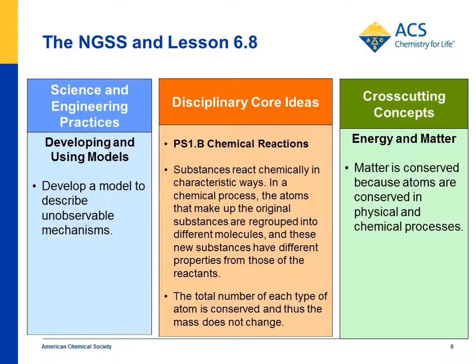The idea is to develop a model to describe unobservable mechanisms — that's when students see the transfer of a proton from one water molecule to the other and begin to understand H3O+ and OH-, and that the amount of H3O+ determines the pH. Substances react chemically in characteristic ways: citric acid interacts with the indicator and turns it red — that's a characteristic reaction for acids — and bases interact with an indicator and turn it purple because of their characteristic properties.